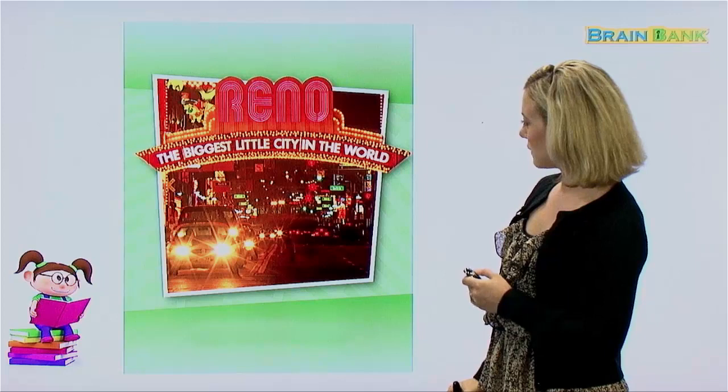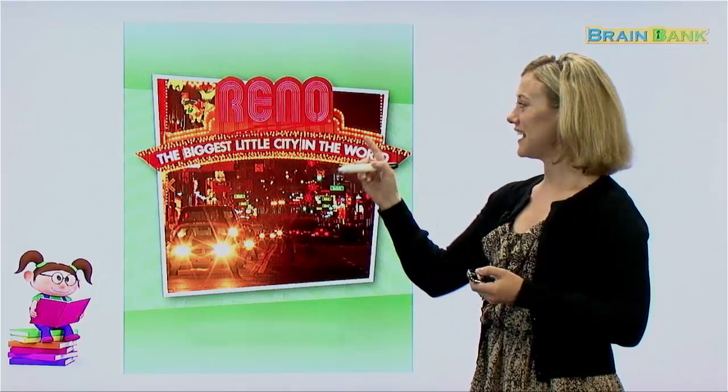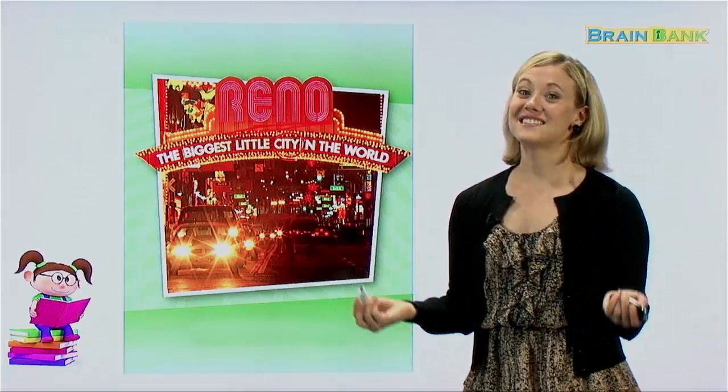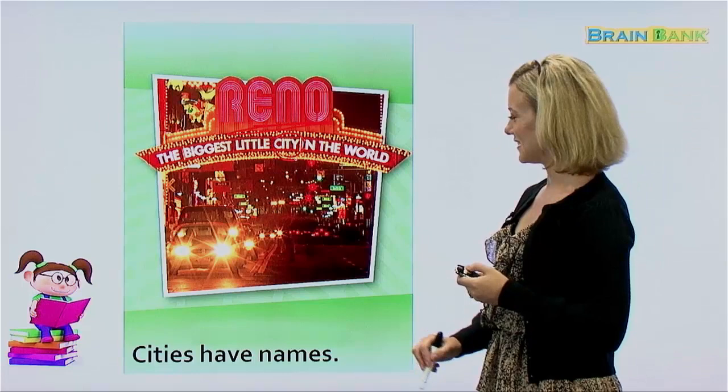Wow, this is an exciting picture — I see lots of lights. Here we have a name: Reno. Does anyone know what Reno is? There's a hint — it's in the sign: 'the biggest little city in the world.' Reno is a city. So even cities have names. Cities have names — let's read it all together. Cities have names. Very good.